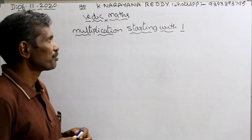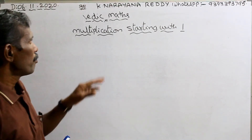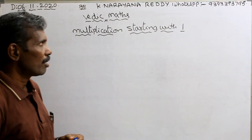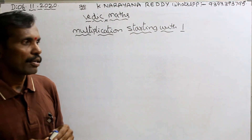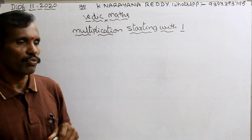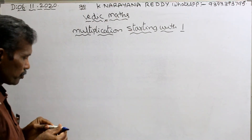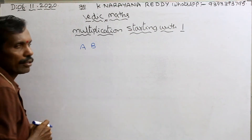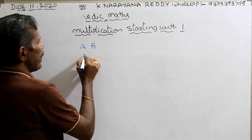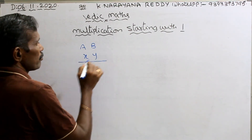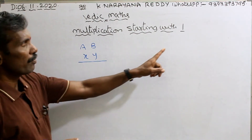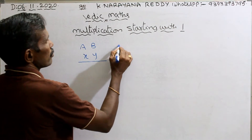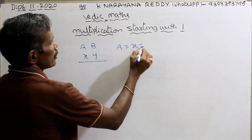Welcome to the channel. Multiplication starting with 1. What to do with multiplication of a number starting with 1? For example, AB is a number, XY is another number. Starting with 1 means a equals to x equals to 1.